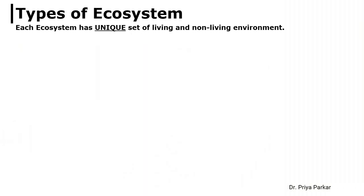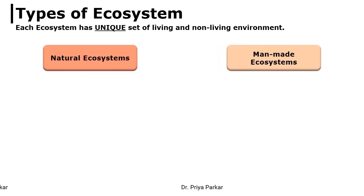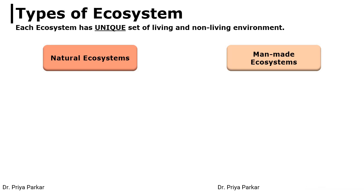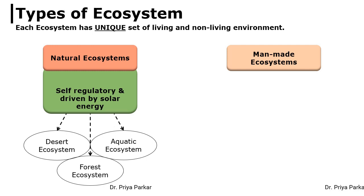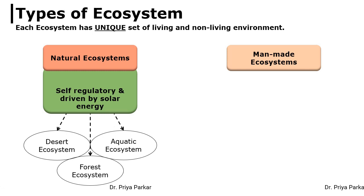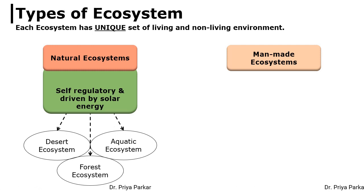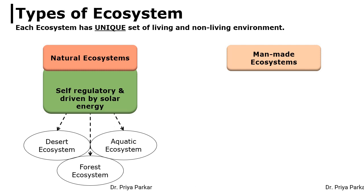Now let us look at the types of ecosystem. Basically, there are two types of ecosystem: the natural ecosystem and the man-made ecosystem. The natural ecosystem is regulated by the sun — it completely depends on the sun and satisfies all types of needs including food, water and energy supply. Thus, desert ecosystem, polar ecosystem, forest ecosystem and aquatic ecosystem are examples of the natural ecosystem.